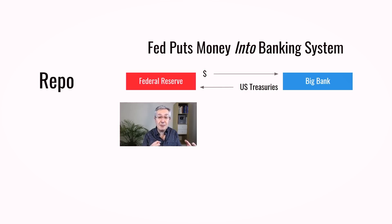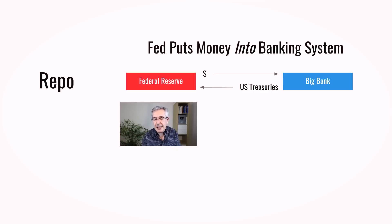Those treasuries sit on the Federal Reserve's balance sheet maybe overnight and then the following day the whole thing is unwound, so the treasuries go back to the bank, and cash moves in the opposite direction. The word repo means sale and repurchase — it's usually overnight but can be term repo lasting maybe a week. The net effect is to take treasuries off the bank's balance sheet and put them onto the Federal Reserve's, and that way the Fed injects money — liquidity — into the banking system.